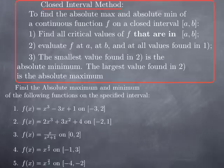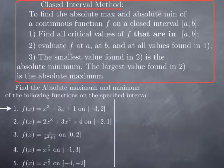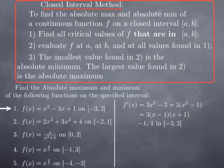Let's look at some examples. We want to find the absolute maximum and minimum for the function x³ - 3x + 1 on the closed interval [-3, 2]. The first step is to find all critical values of the function in the interval. Because we have a polynomial, the critical values are the zeros of the derivative, since the derivative is defined everywhere. We calculate the derivative and obtain 3x² - 3, which factors as 3(x - 1)(x + 1). That means we have two critical values, -1 and 1, and they are both in the interval [-3, 2].